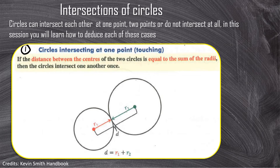Intersection of circles. You have to know that circles can intersect each other at one point, or they can intersect each other at two points, or they may not intersect each other at all. In this session you'll learn how to deduce each of these cases — how to determine if two circles are intersecting at one point, at two points, or not at all, using coordinate geometry.